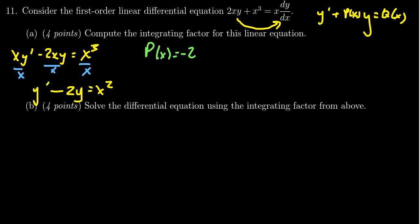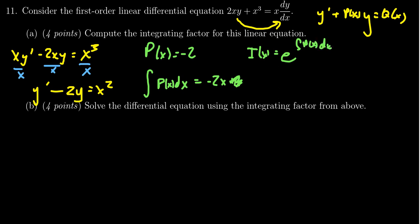To calculate the integrating factor, after identifying p(x), we integrate it with respect to x, giving us negative 2x plus c. For the integrating factor, the constant doesn't matter, so we set it to zero — one of the few times omitting plus c incurs no penalty. The integrating factor i(x) equals e to the integral of p(x), which gives us e to the negative 2x.